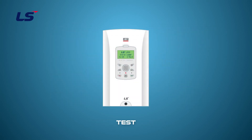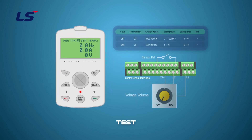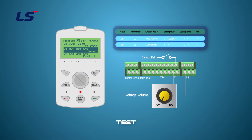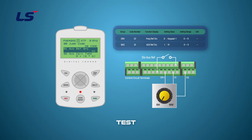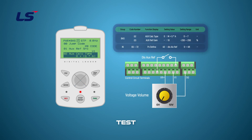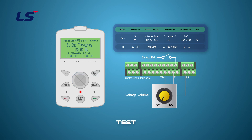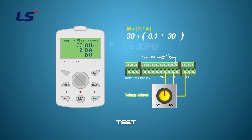Next, we will test the auxiliary speed function. For the test, set the parameters as follows: DRV7 is set to 0 and BAS1 is set to 1, so the main speed frequency reference source is controlled by the keypad and the auxiliary speed is controlled by V1. Since the auxiliary speed command is set to V1, wire the volume resistance accordingly. The auxiliary speed command operation can be set in BAS2, and in this video it will be set to 0. The auxiliary speed command gain value can be set in BAS3, and in this video it will be set to 10%. The main speed is set to 30 Hz with the keypad and the auxiliary speed is set to 5 volts with the volume. According to all setting values, the frequency value is calculated as follows.